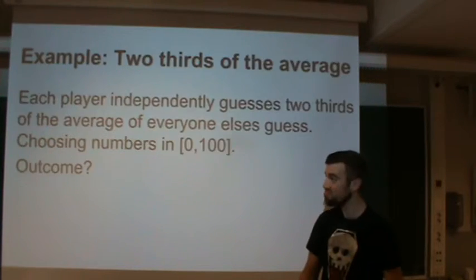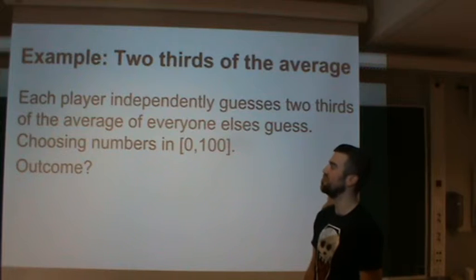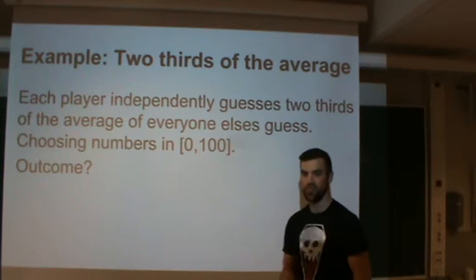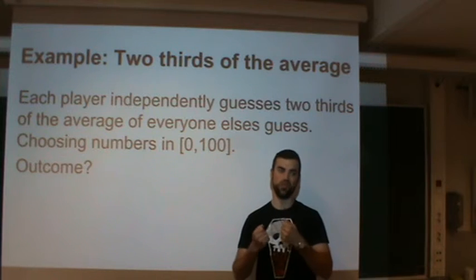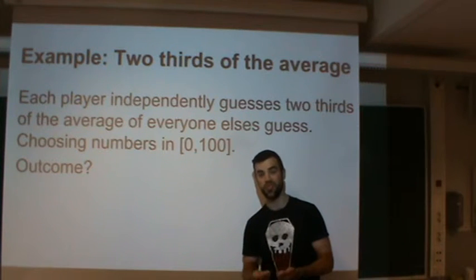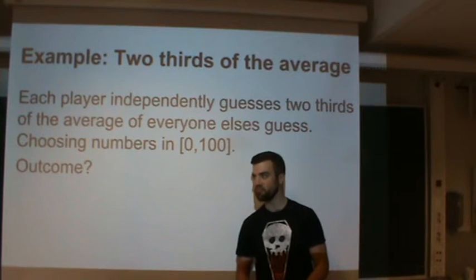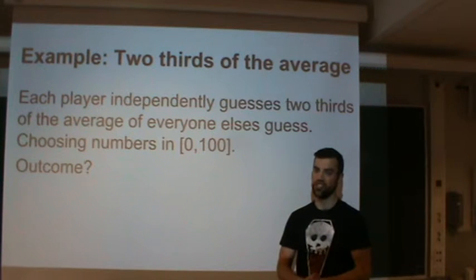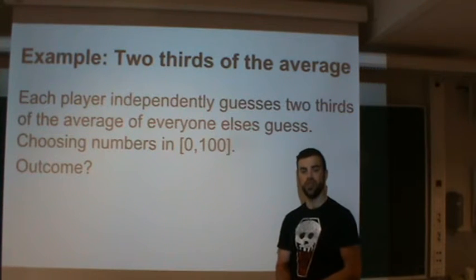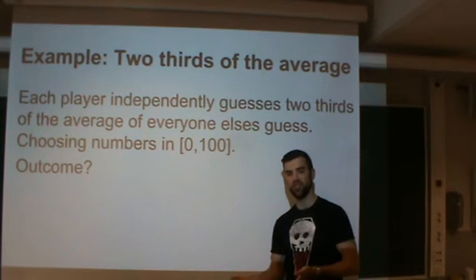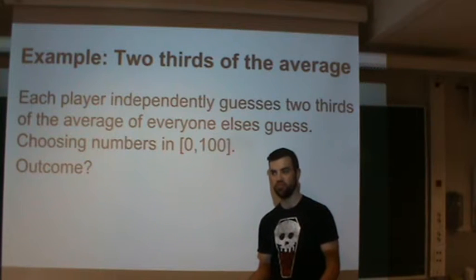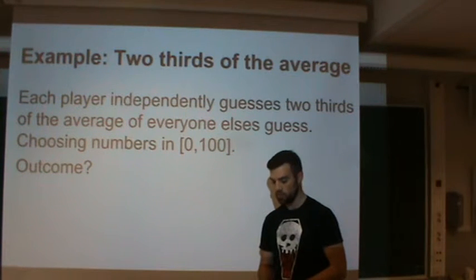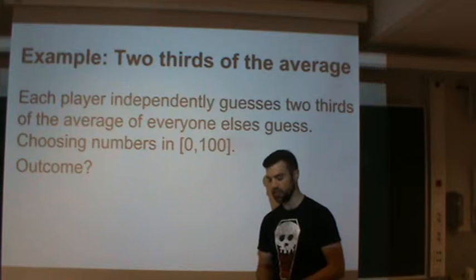The next example is called two-thirds of the average, and the rules are quite simple. You are supposed to guess two-thirds of the average of everyone else's guess. You get to choose numbers in the range 0 to 100. Without speaking to anyone else, what is your guess?